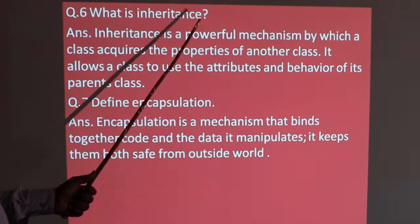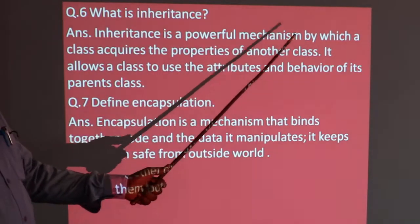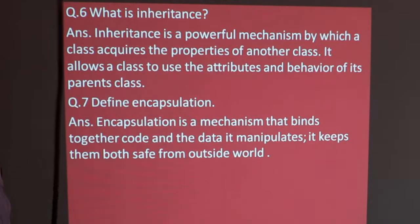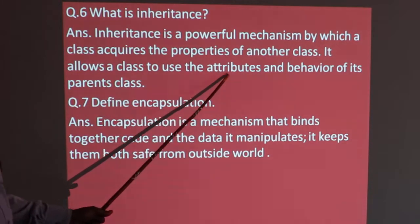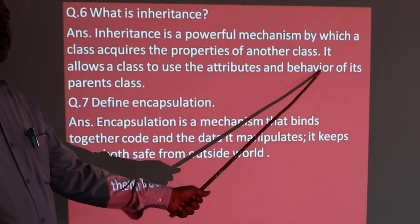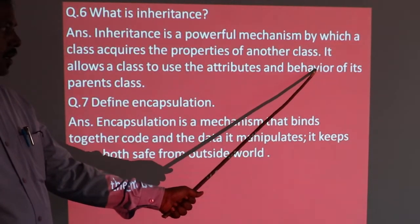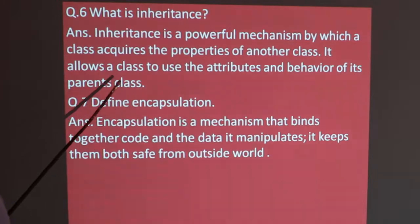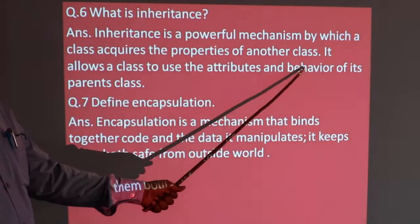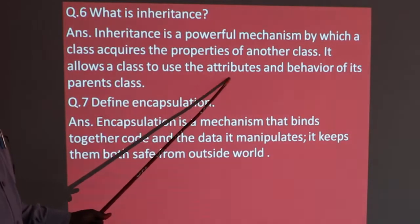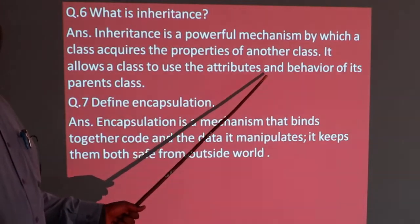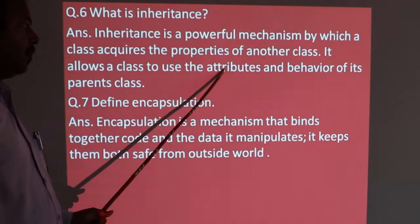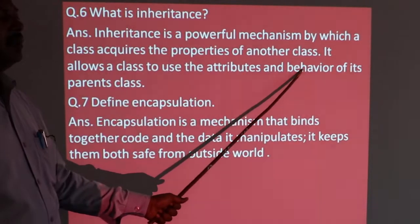What is inheritance? Inheritance is a mechanism by which one class has acquired another class. It allows a class to use attributes and behavior of its parent class. Attributes are data and behavior is function or method. So a child class can access the parent class properties, that is data and functions.